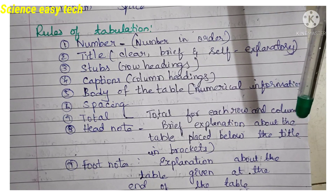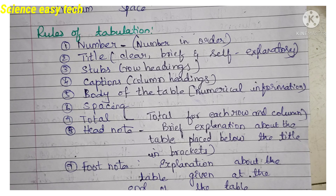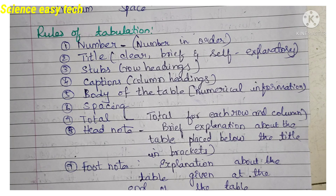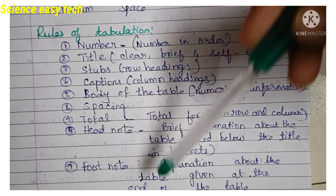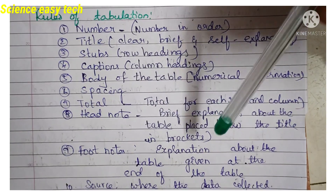Head notes are a brief explanation about the table placed below the title in brackets. For example, if the title is 'Demographic variables of Group 1,' you can write in brackets 'Experimental group.' Similarly, for Group 2, you can write 'Control group' in brackets.